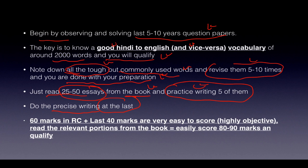Do the precis writing at the last — I am repeating this again and again, please remember it. For English or Hindi, do precis writing last. 60 marks in reading comprehension plus the last 40 marks in grammar/Mohawrit are extremely easy to score — almost 100% marks, so you can easily get 90 marks because they are highly objective and a person cannot go wrong. Please read the relevant portions from the book for the last 40 marks.